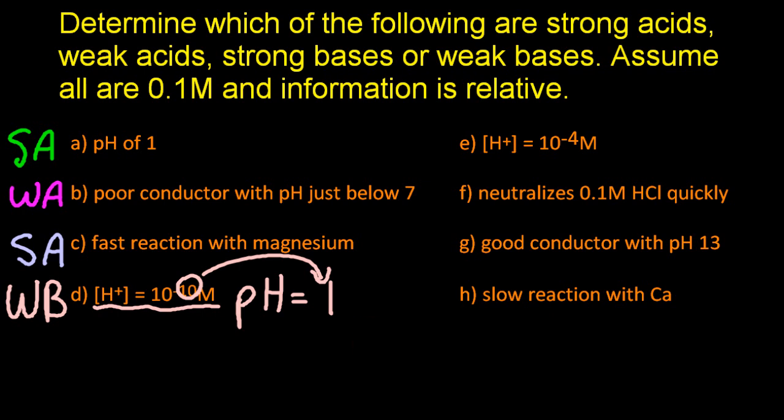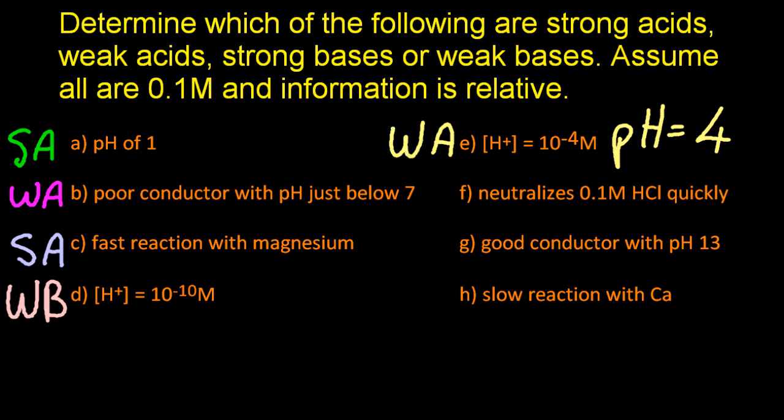For E, the hydrogen ion concentration is 10 to the minus 4. And using the same logic, that's going to give me a pH of 4, which is below 7, so it must be an acid, but not much below 7, so it's a weak acid.